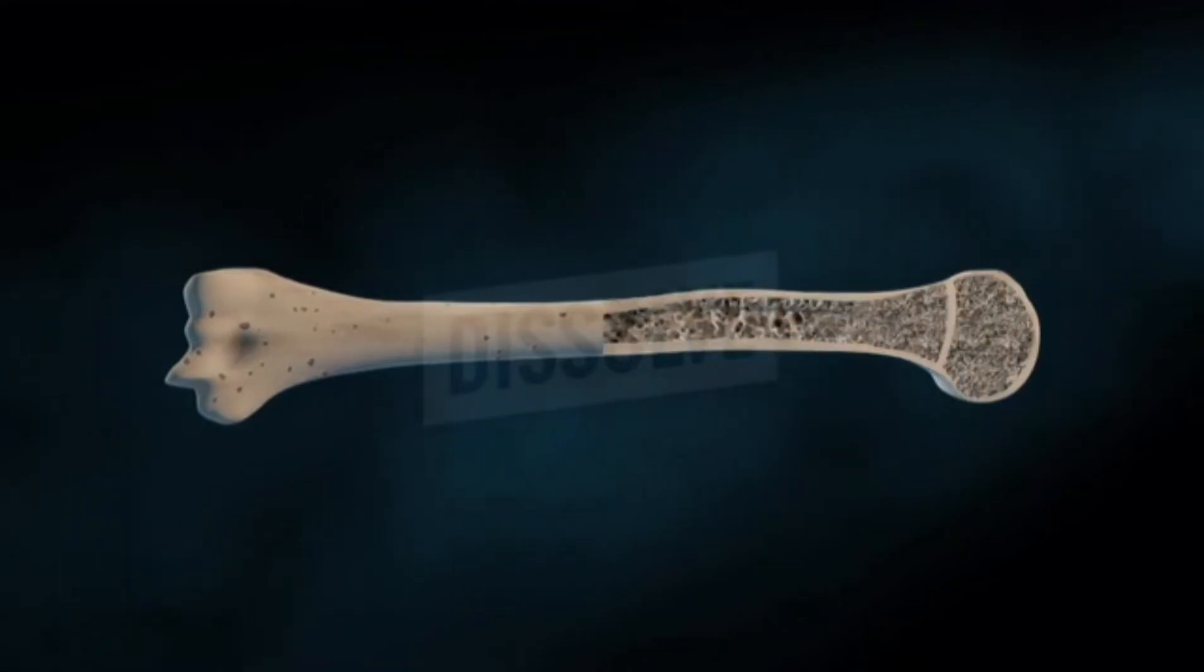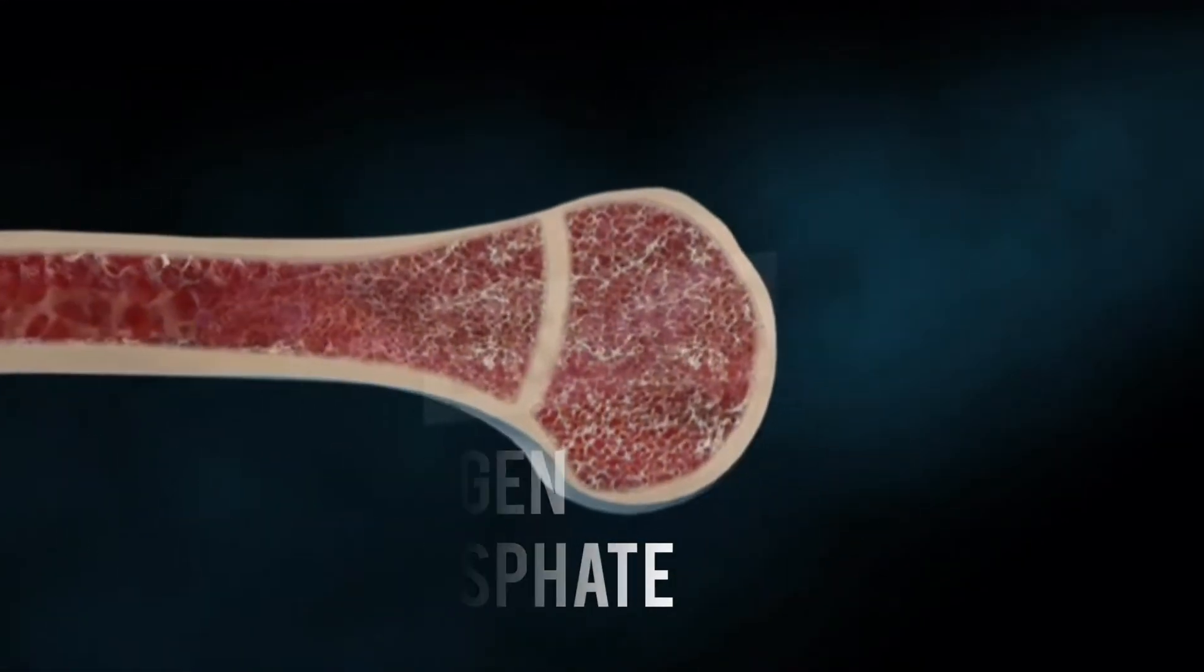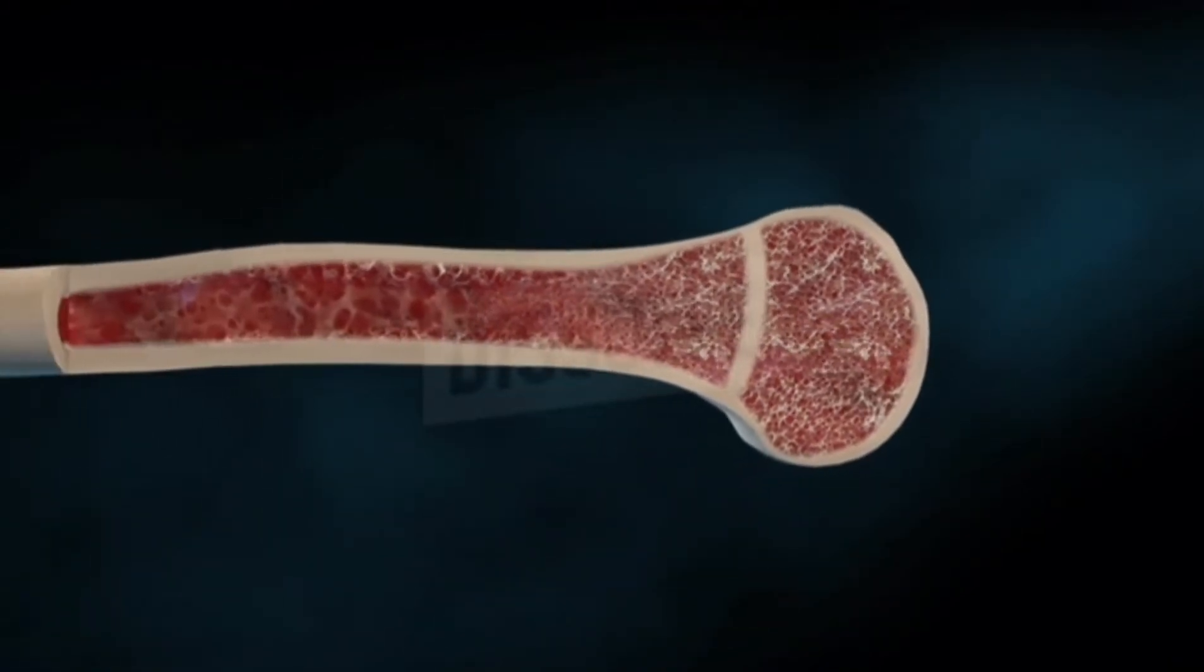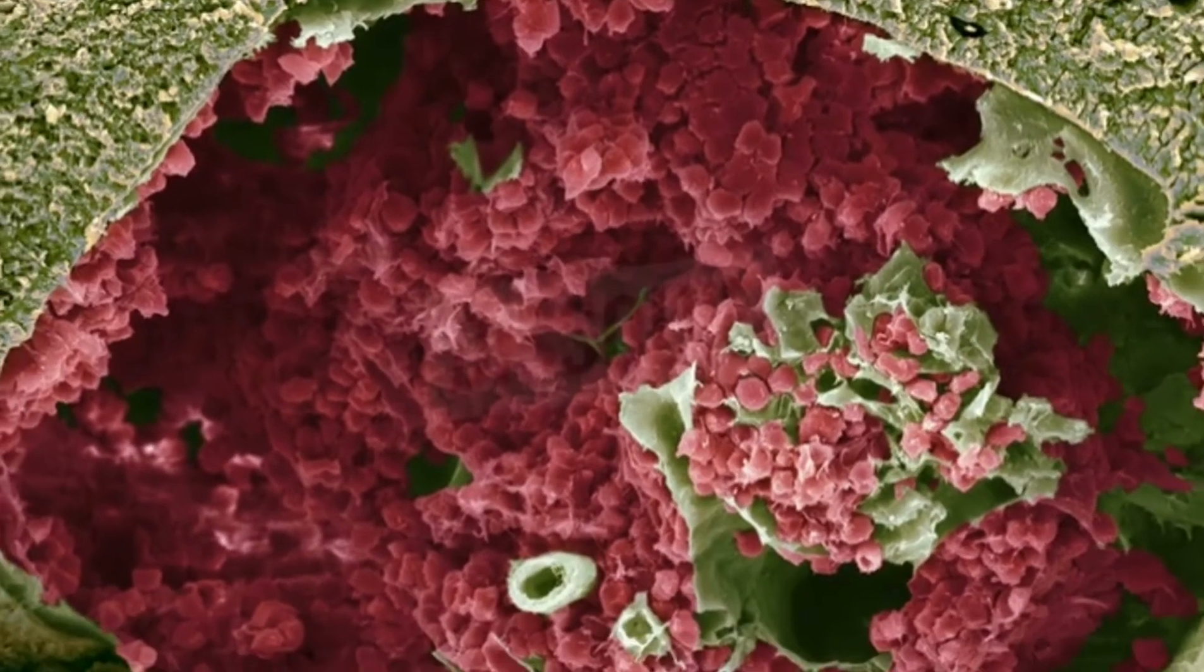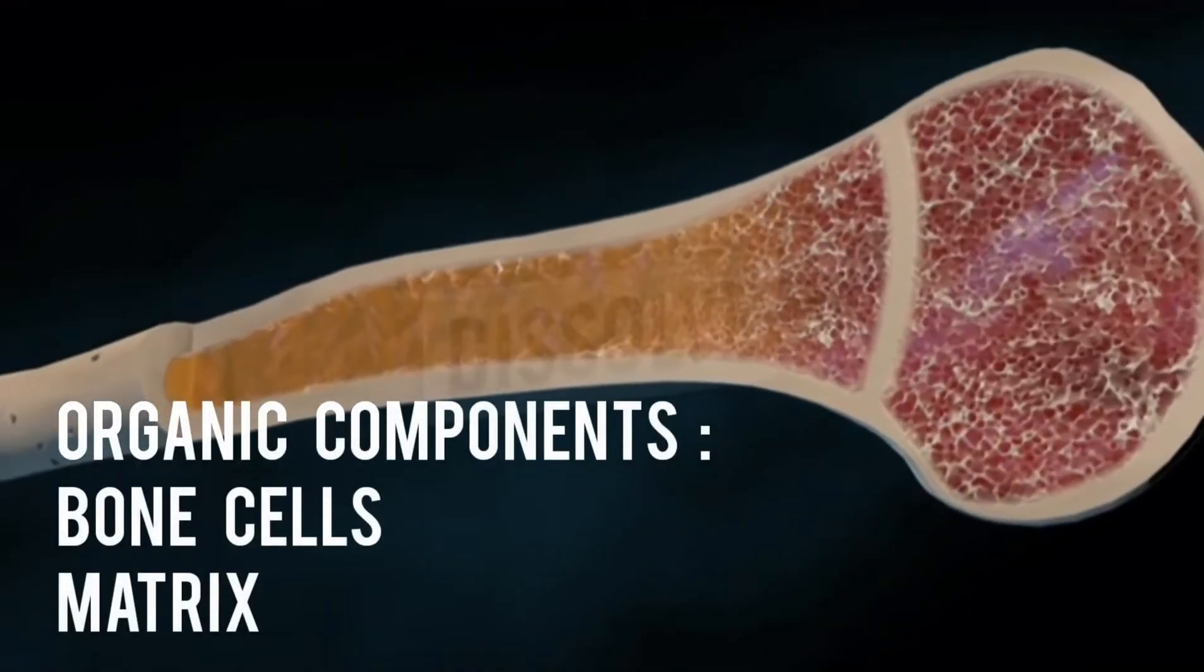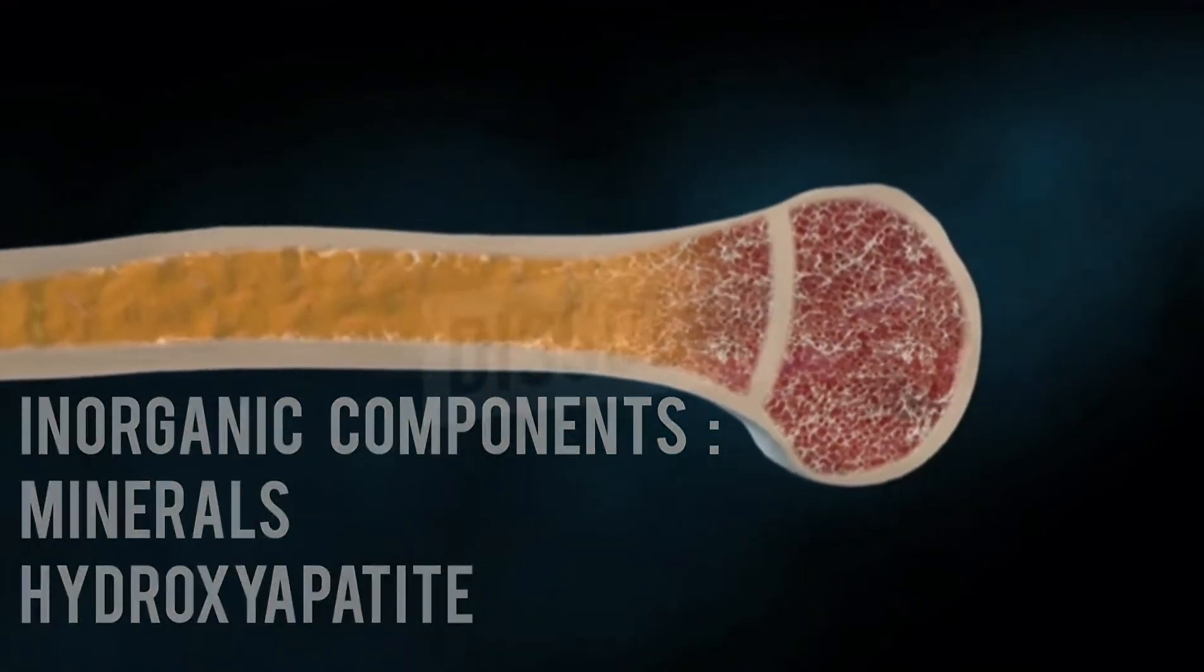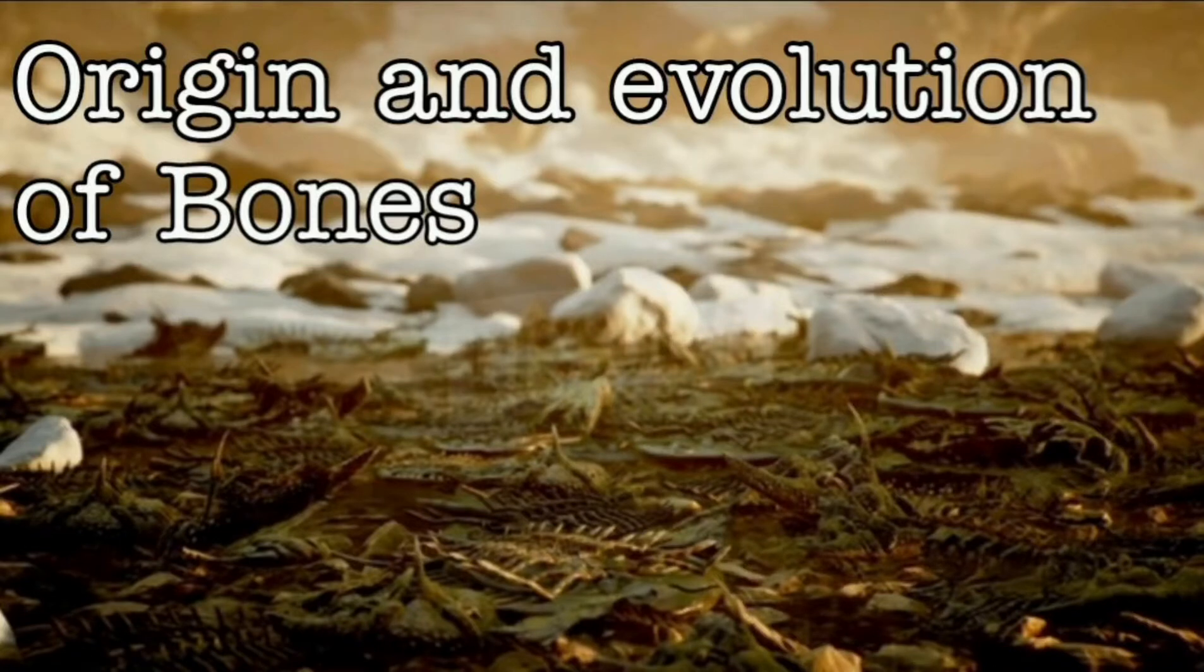Bone is a specialized connective tissue that is made up of type 1 collagen and calcium phosphate. It is a very strong and rigid tissue required for locomotion, movement and also for the formation of stem cells. Bone has molecular components such as the organic cells in matrix and inorganic minerals such as hydroxyapatite. With this introduction we can start off with the origin and evolution of bones.